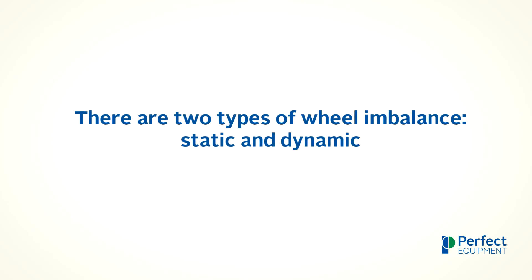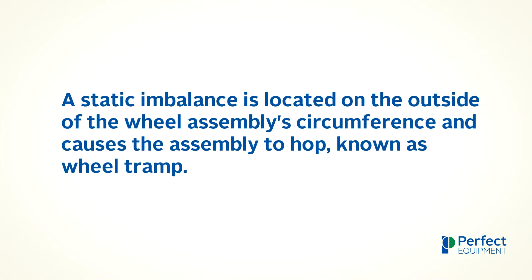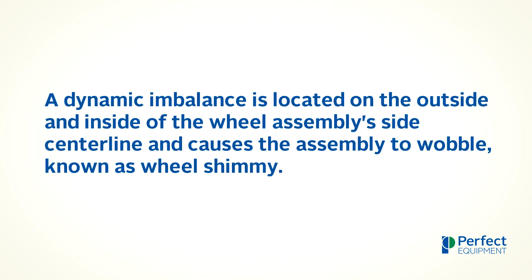When discussing the causes of wheel imbalance, it is important to remember that there are two types of wheel imbalance: static and dynamic. A static imbalance is located on the outside of the wheel assembly circumference and causes the assembly to hop, known as wheel tramp. A dynamic imbalance is located on the outside and inside of the wheel assembly side-center line and causes the assembly to wobble, known as wheel shimmy.